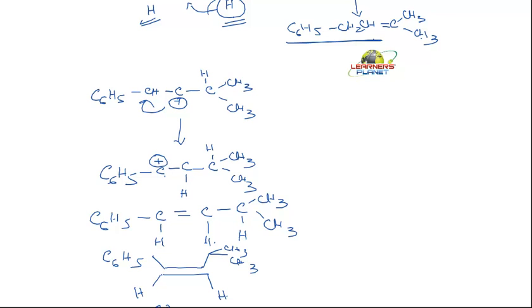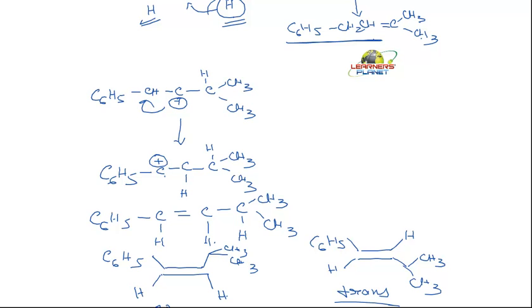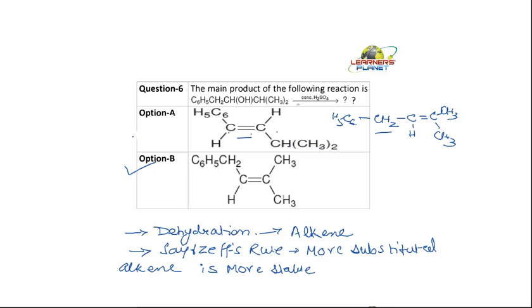The trans isomer has C₆H₅ and H on opposite sides with CH₃ groups. Among these two products, the trans one is more stable. C is more stable due to the extended conjugation of the double bond. So we have got cis and trans isomers — our option would be A, not B. Because of the cis and trans isomer formation, the answer we are getting is A. We have to consider isomerization and arrangements — this is the most stable product and it is also more substituted. So our option is A.